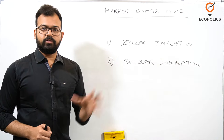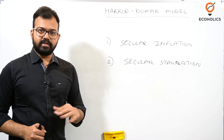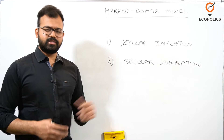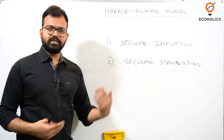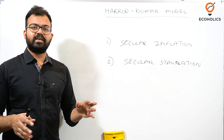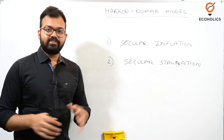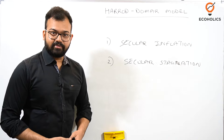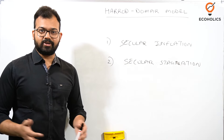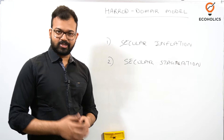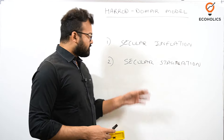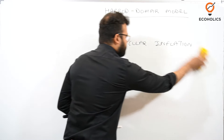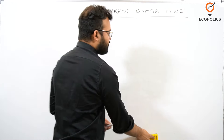In the next lecture we will see the full model — first Domar, then Harrod — and then we'll discuss the knife-edge equilibrium and the three types of growth rates they identified: the warranted growth rate, the natural growth rate, and the actual growth rate.